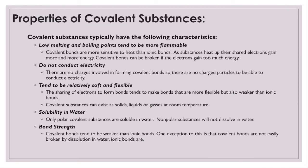Covalent substances tend to have low melting and boiling points, and they tend to be more flexible. Covalent bonds are more flammable and more sensitive to heat than ionic bonds. When substances heat up, the electrons sharing in covalent bonds gain more and more energy, and eventually they reach a point where there's so much energy that those atoms can no longer share those electrons, and the bonds are broken.